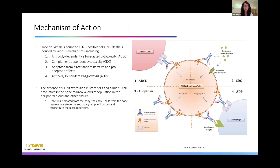A very brief mechanism of action of rituximab: there are four various ways it can promote the cytotoxic nature of the drug. Most commonly, cell lysis happens from antibody-dependent cell lysis and complement-dependent cell lysis. In addition, there can be apoptotic features and phagocytosis that add to the destruction and elimination of these B cells from the peripheral blood.